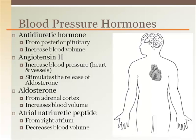Atrial natriuretic peptide causes vasodilation to lower pressure and targets the kidney to release more water, which decreases blood volume through diuresis.